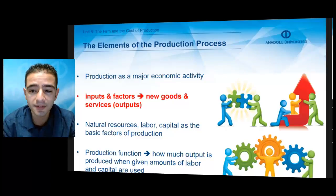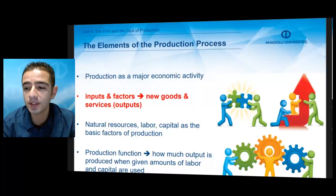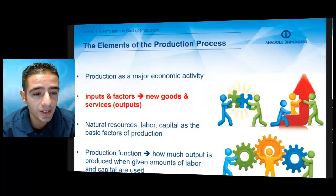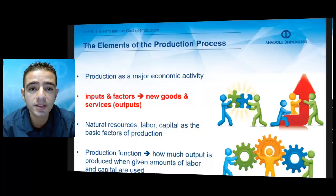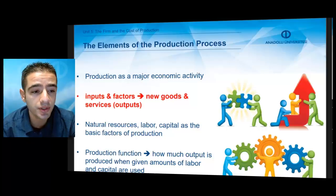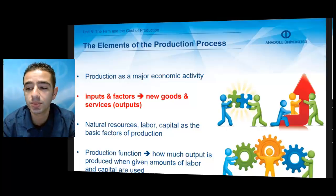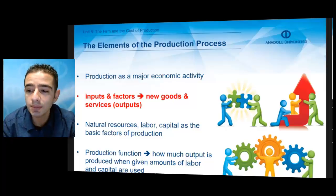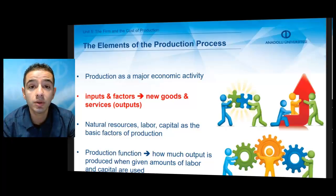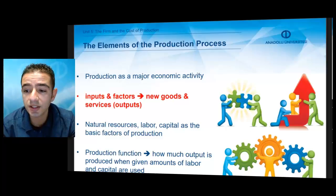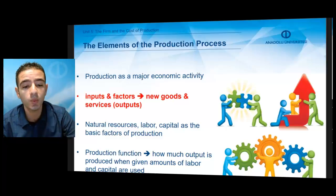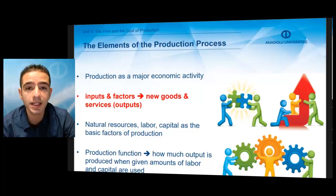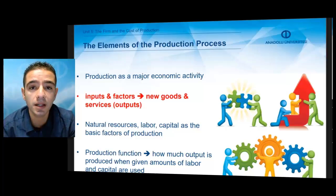The factors that form a basis for this production process can be natural resources, labor, capital, and entrepreneurship as the basic factors of production. There is also another important element called the production function, which refers to how much output is produced when given amounts of labor and capital are used.